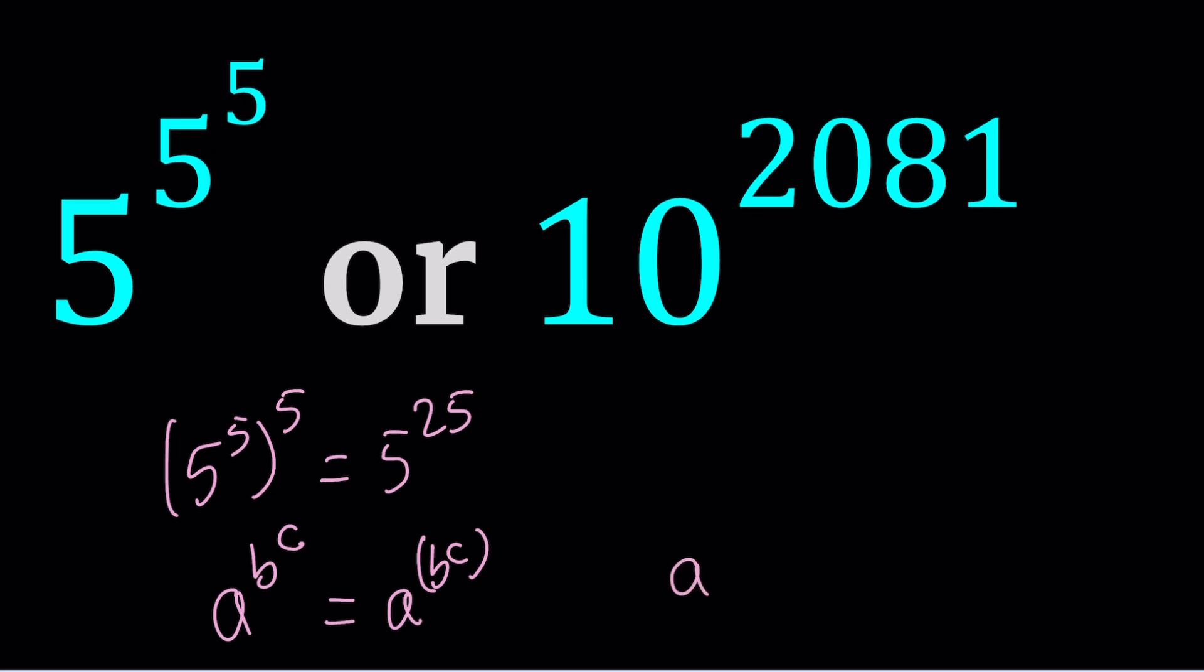Because if you wanted to write a to the power b to the c, where a to the b is the base, then we would just write it as a to the power bc. Make sense? Having said that, now let's talk about how we can compare these numbers.